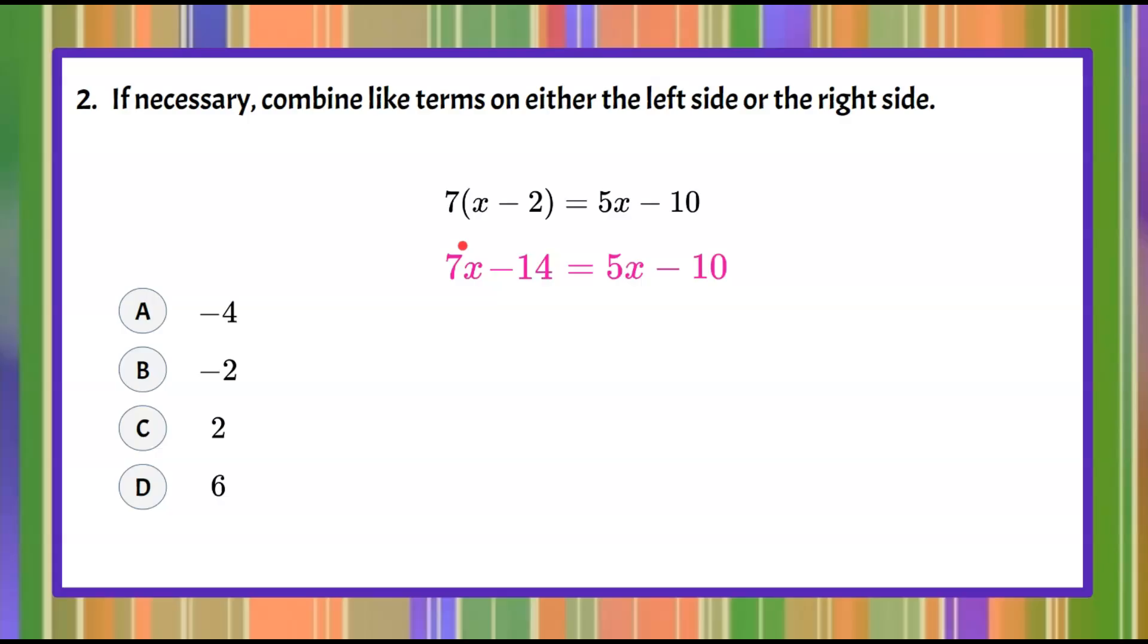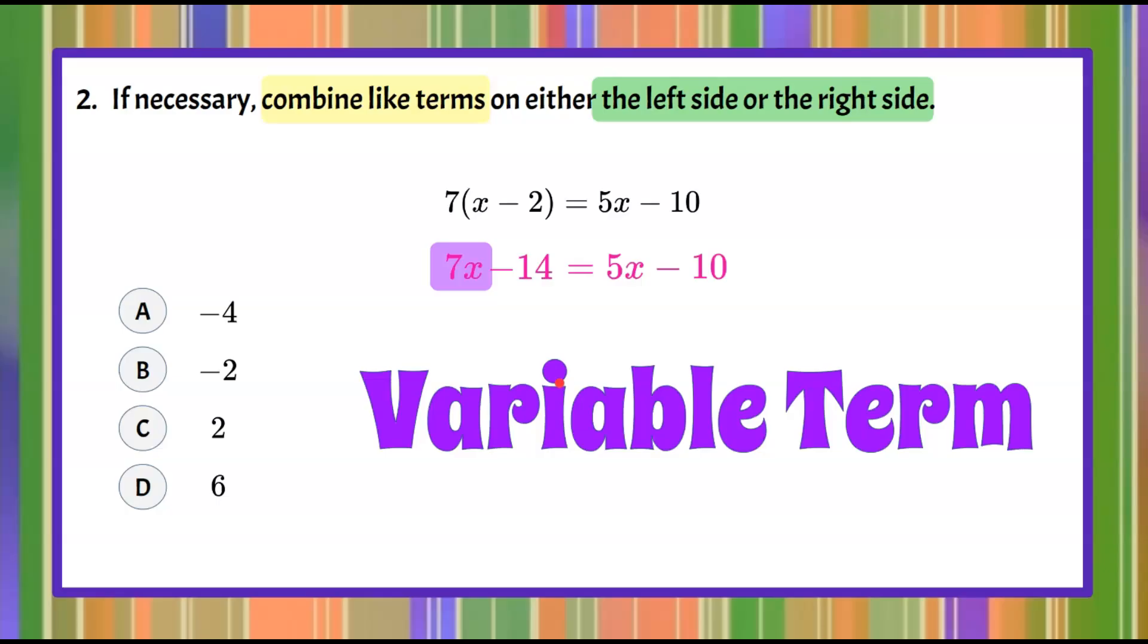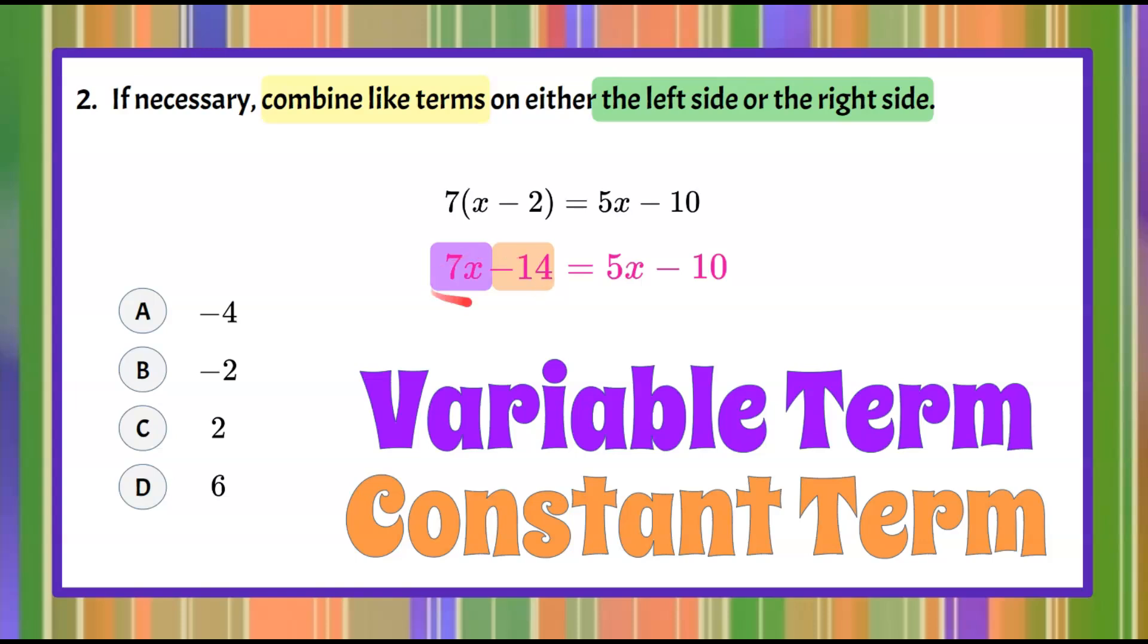Let's move on to step two. If necessary we need to combine like terms on either the left side or the right side. So kind of think of this as cleaning house. So we're going to look at just the left side in isolation and then we'll consider the right side. We're talking about combining like terms on left or the right side and we can have a variable term which has a variable so a letter and possibly a number and then constant term which is just a number with no variable so no letter. So on the left side we can see we have one variable term and one constant term so that's what we call in simplest form. You cannot combine this any further. So there are no like terms on the left side.